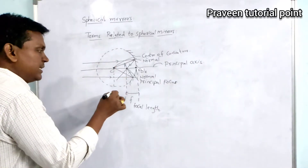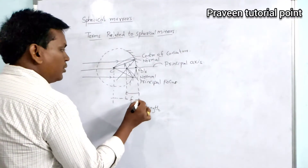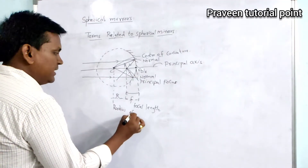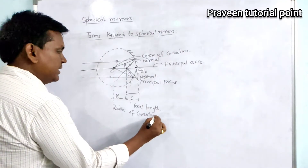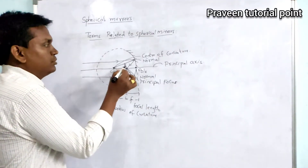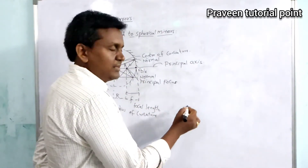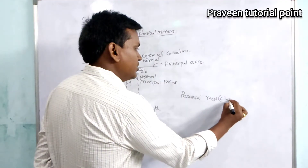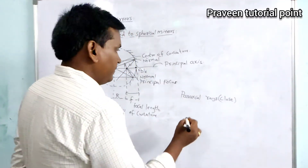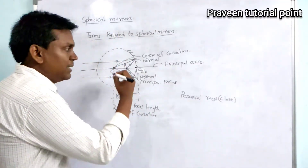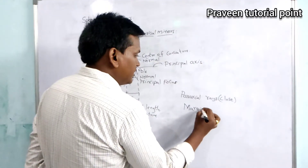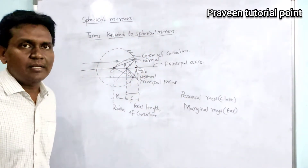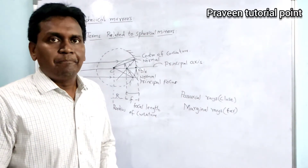The distance between the center of curvature and the pole is called the radius of curvature. If the rays are close to the principal axis, those rays are called paraxial rays. If the rays are far away from the principal axis, they are called marginal rays.